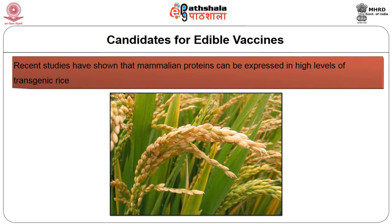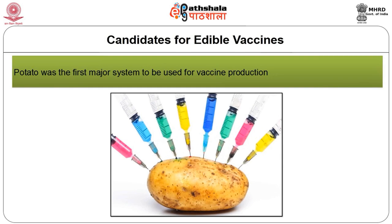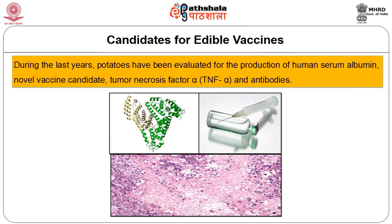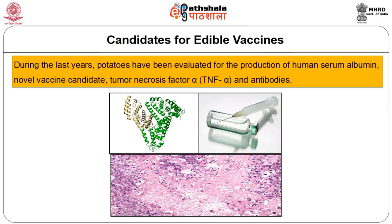Recent studies have shown that mammalian proteins can be expressed at high levels in transgenic rice. Potato was the major system first used for vaccine production. During recent years, potatoes have been evaluated for production of human serum albumin, novel vaccine candidates, tumor necrosis factor alpha, and antibodies.